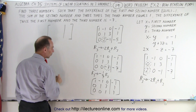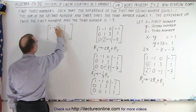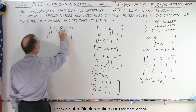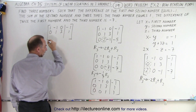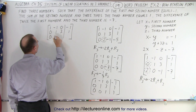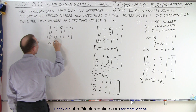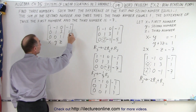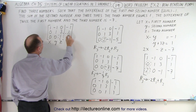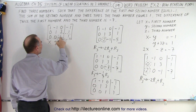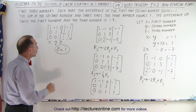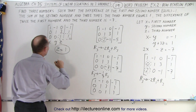Let me rewrite the final matrix: row one is one, negative one, zero, negative one; row two is zero, one, three, one; row three is zero, zero, one, one. This is the x-column, y-column, and z-column. Reading the third row: zero·x + zero·y + one·z = 1, so z equals one. We've found our first variable.